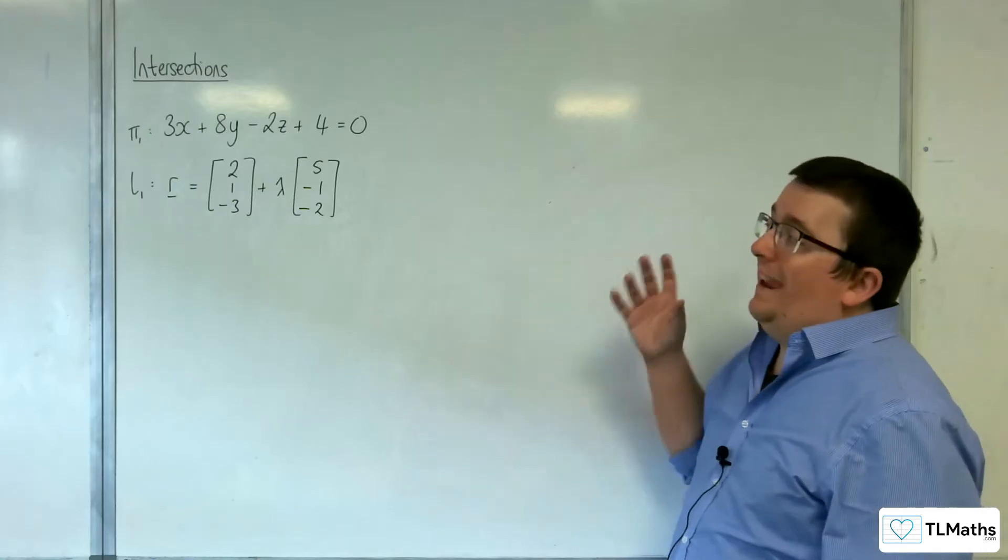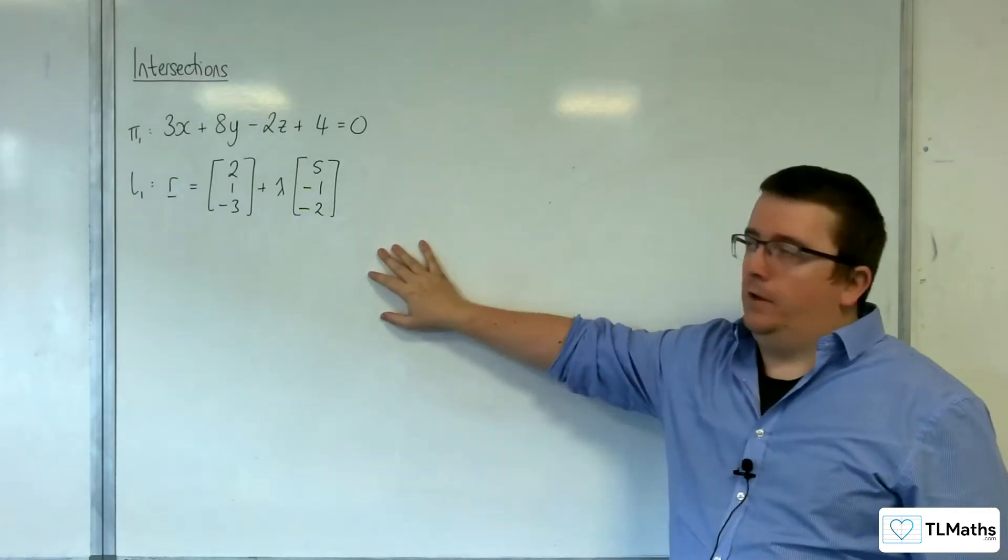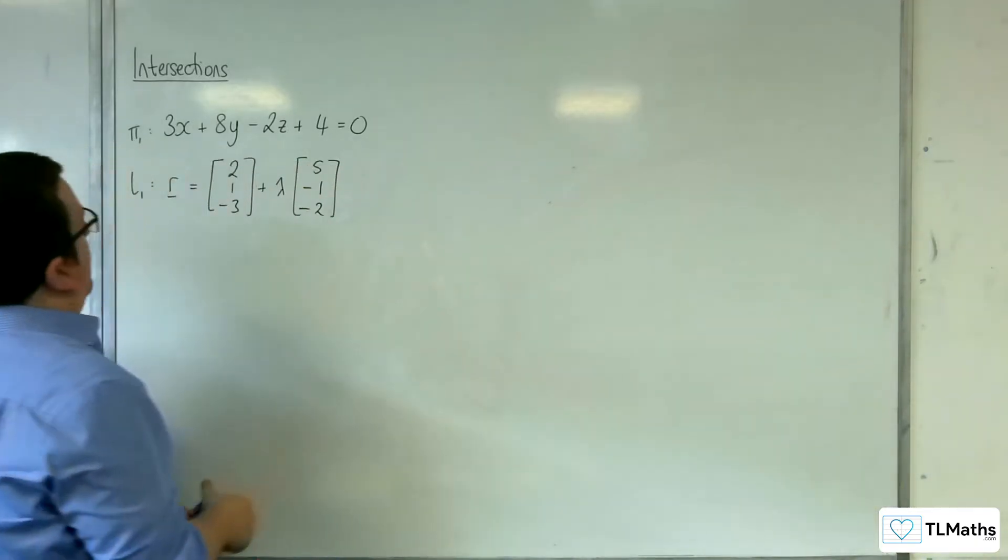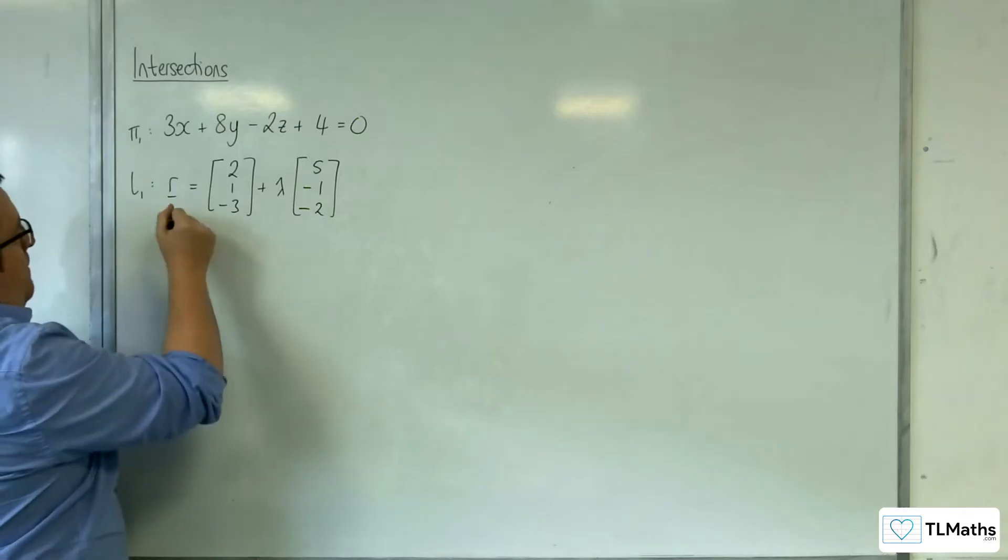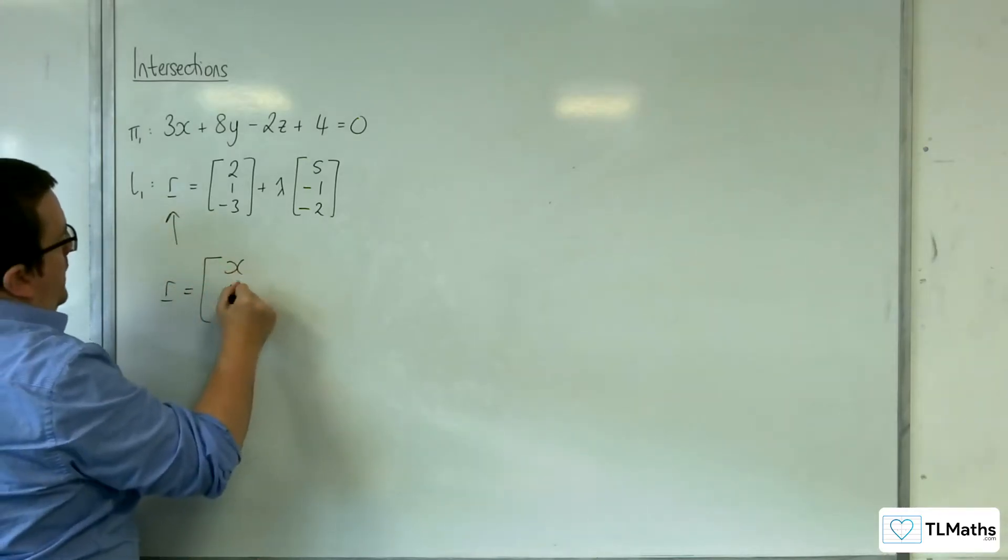So let's say I wanted to find the intersection between this line and this plane. OK, so essentially what we need to understand is that the R here, remember, R is equal to X, Y, Z.